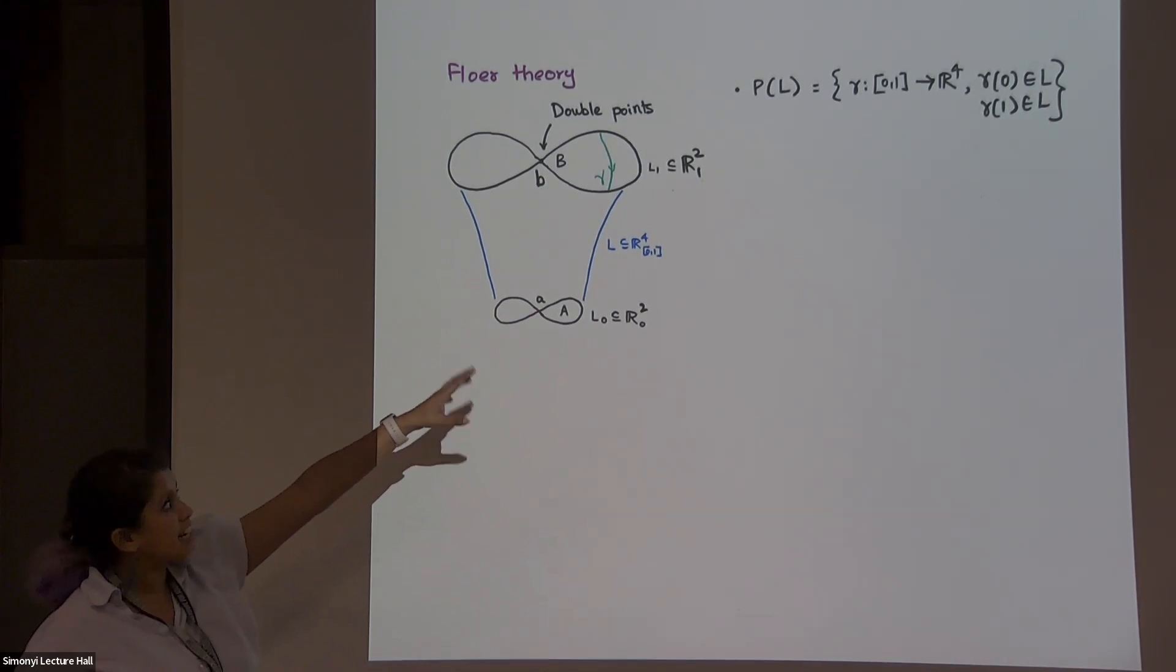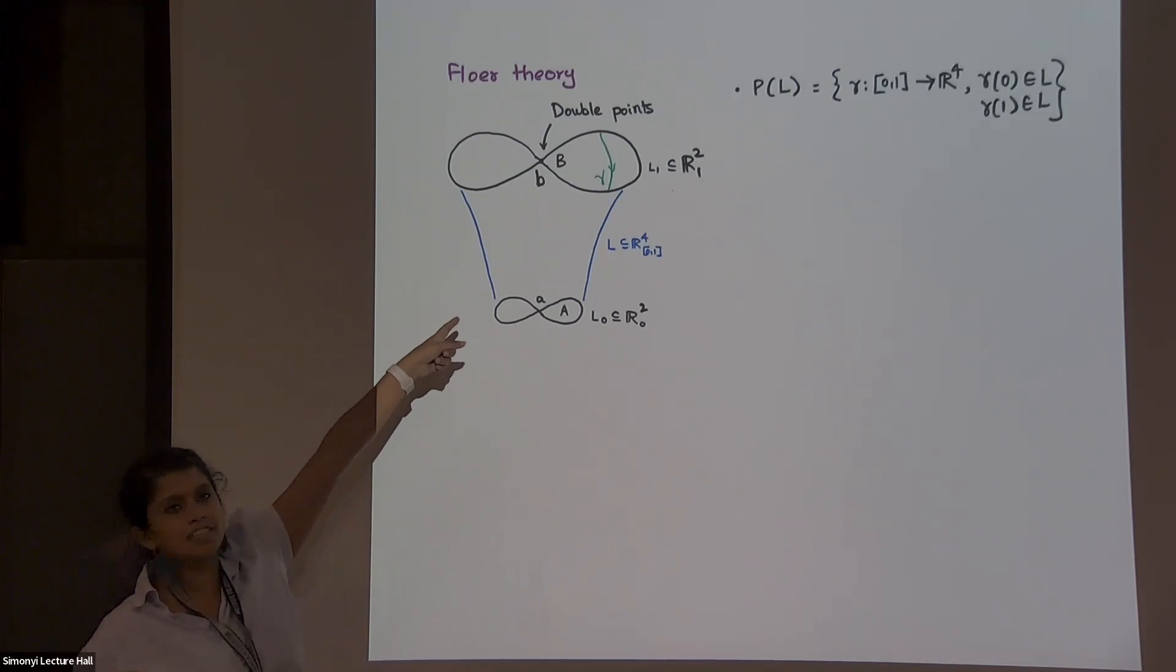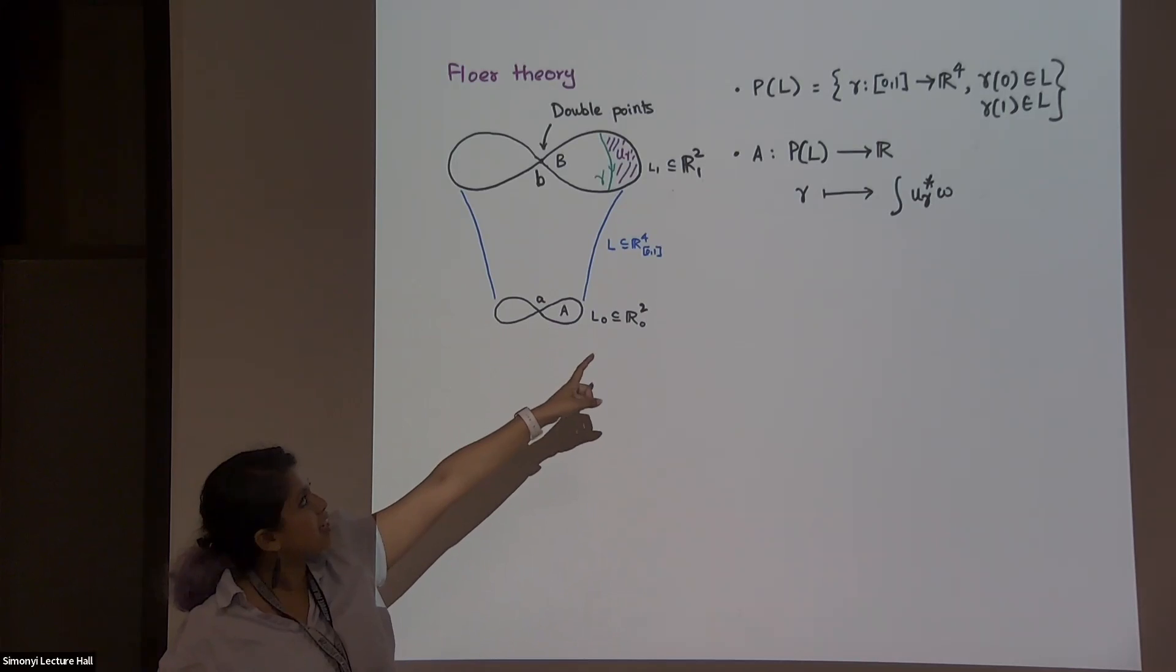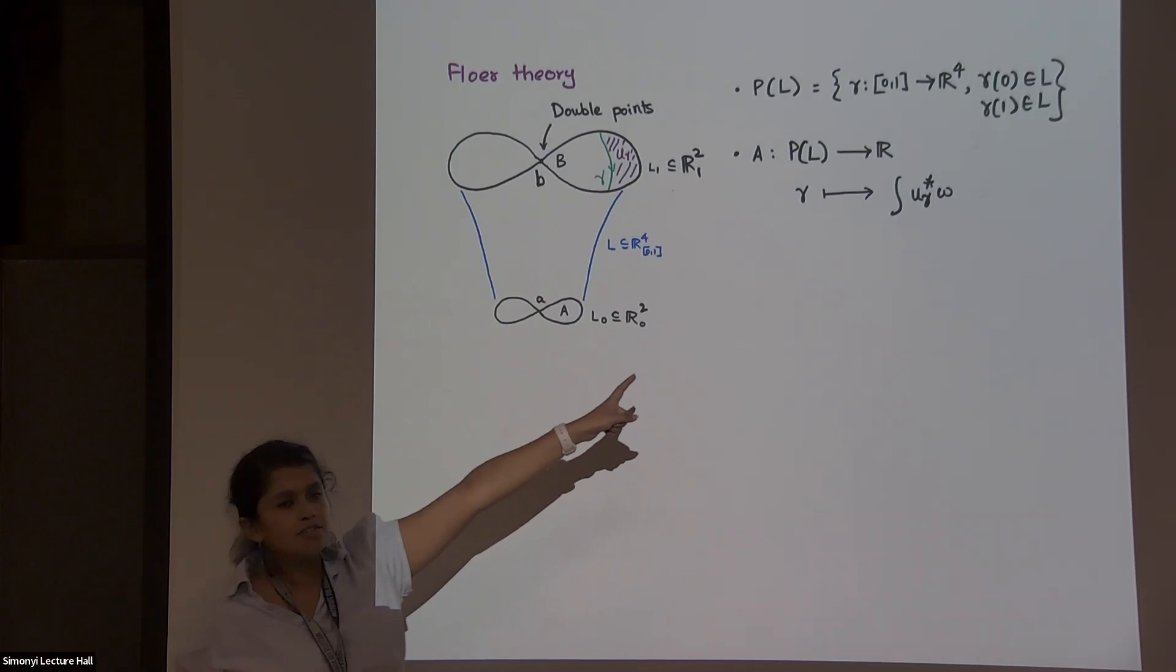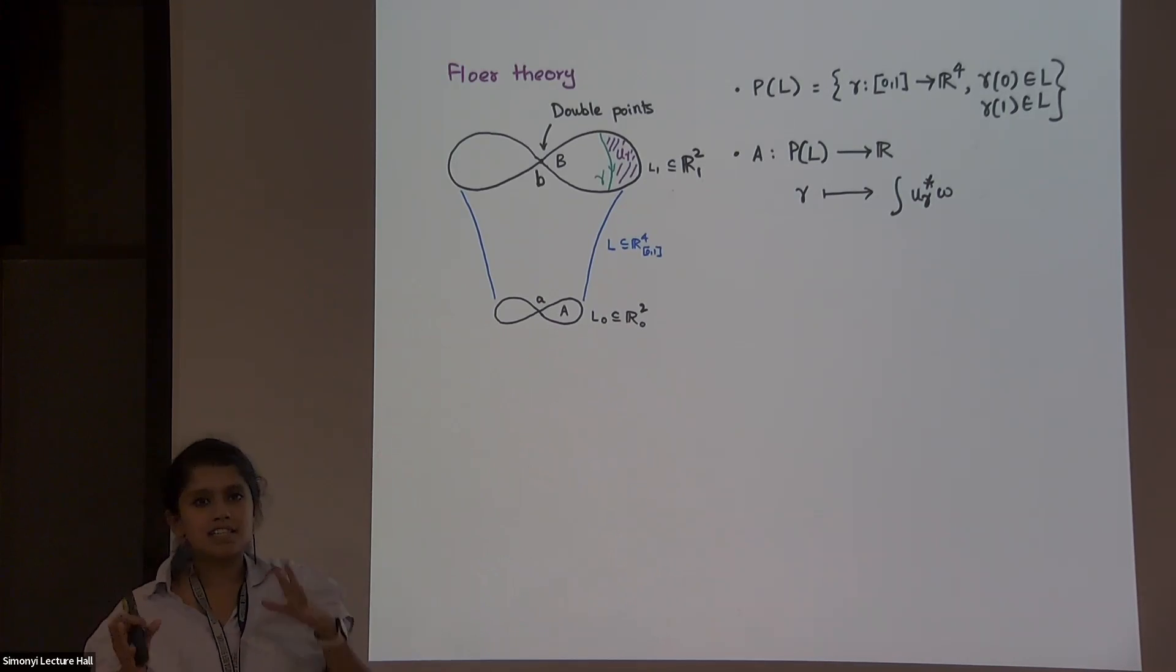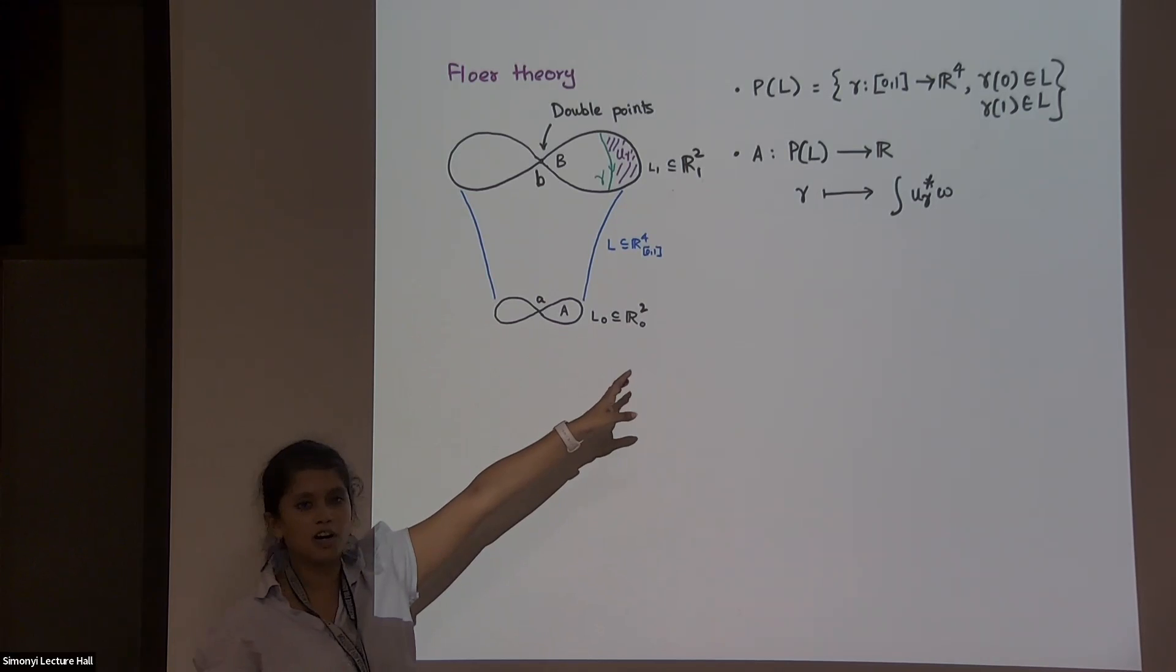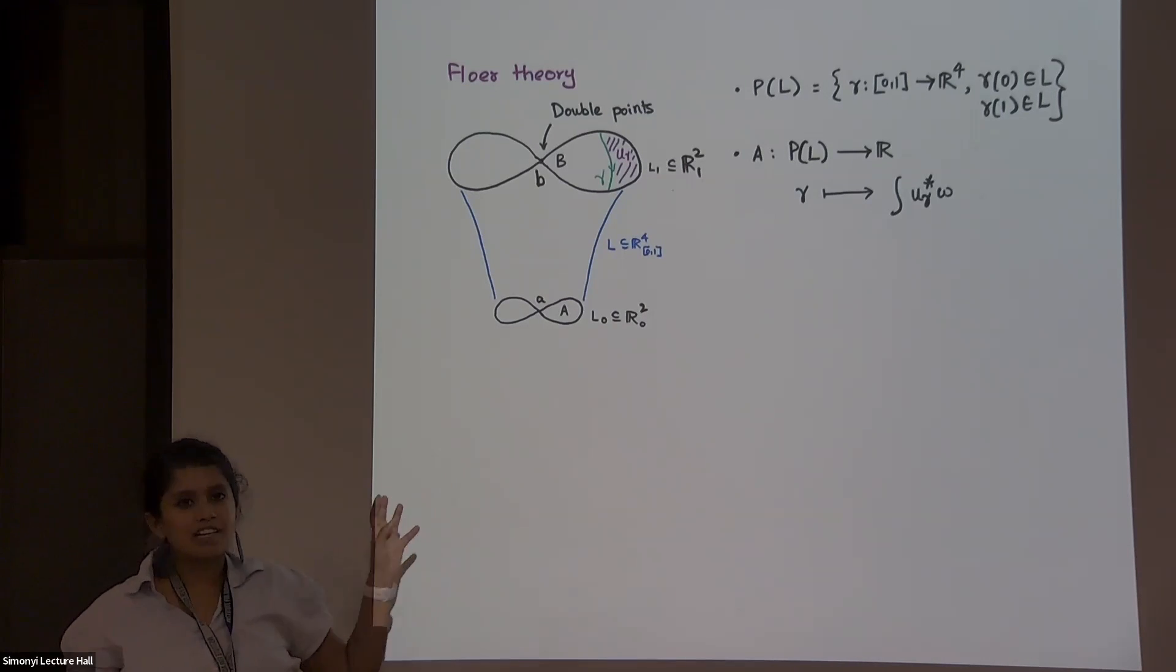I can look at the space of paths with boundary, starting and ending point on my Lagrangian. So it looks like that gamma over there. And on this space, this is an infinite dimensional space, I can look at this function, which to each path assigns that integral. So what is u gamma? It's a disk with one boundary that's gamma, and the other boundary that's sitting on the Lagrangian. So it's like that purple stuff there. And you integrate the form omega that we started with, the symplectic form on it.